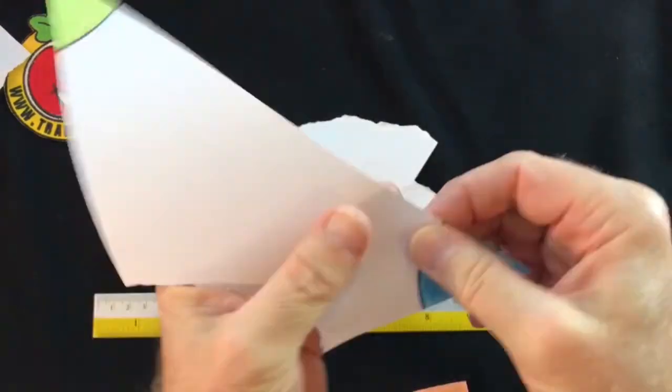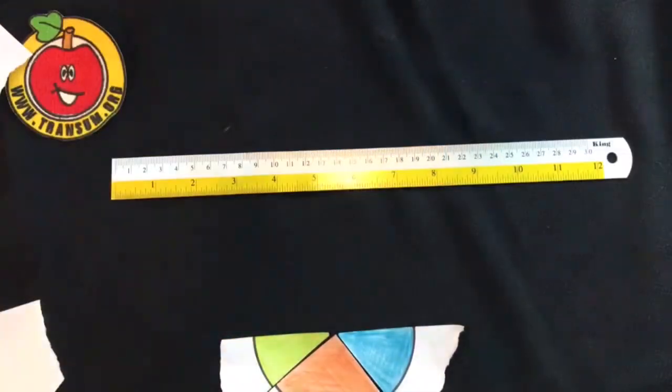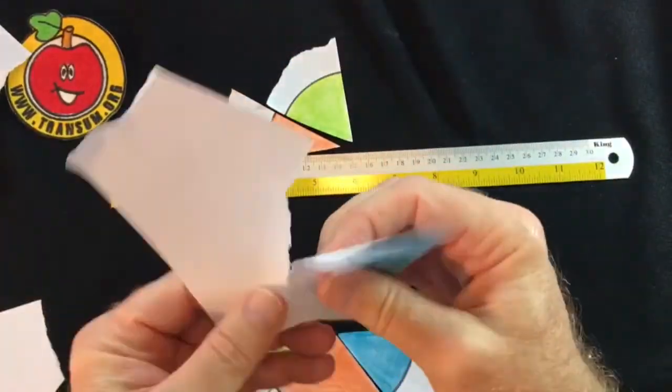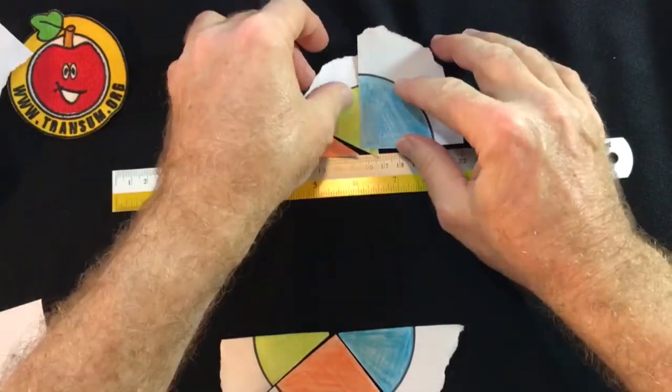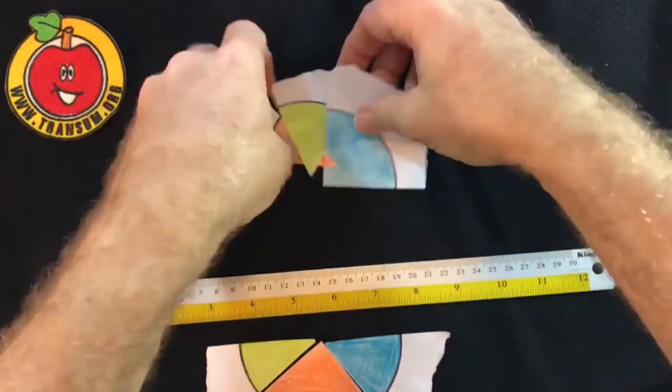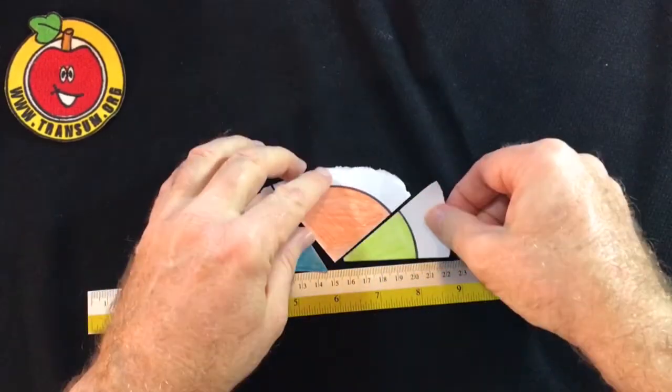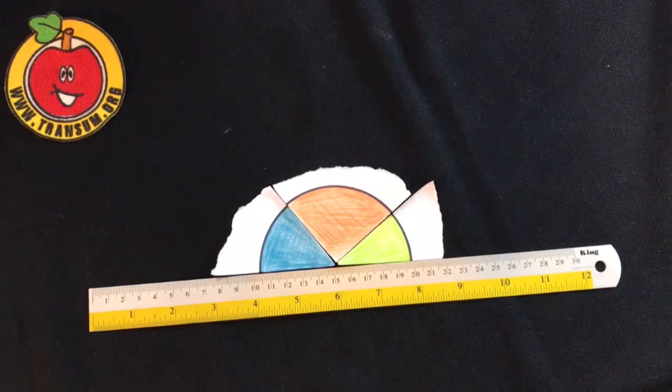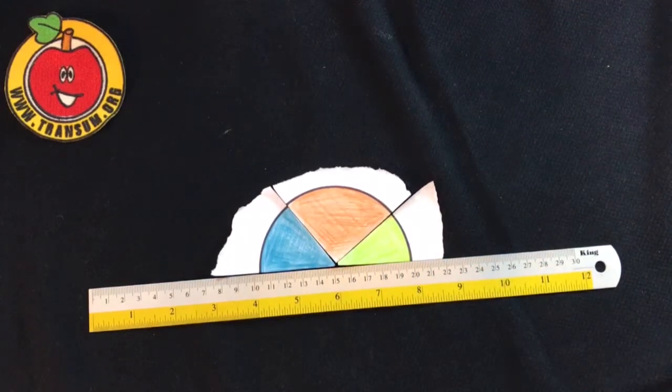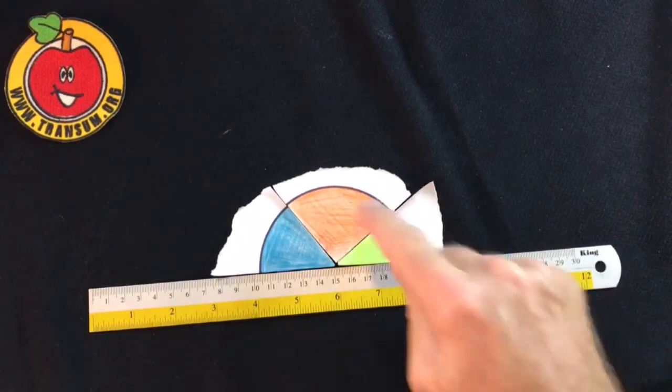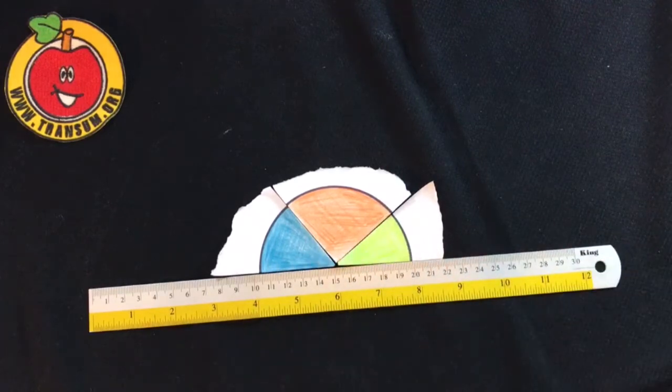And that's true for any triangle, whether it be a right angle triangle, an equilateral triangle, an isosceles triangle. They will always fit together to make a straight line. And that angle on a straight line is exactly 180 degrees. So this shows that the three angles of a triangle add up to 180 degrees.